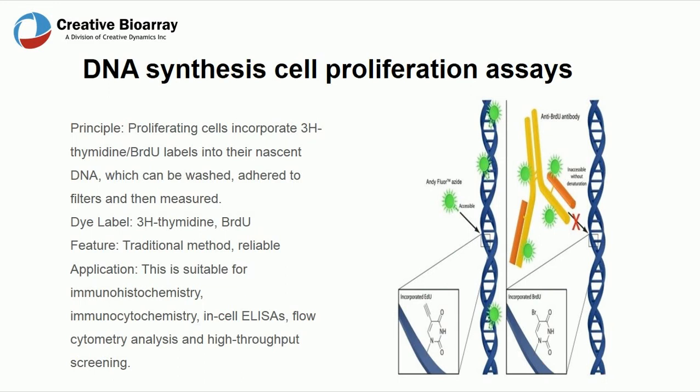For DNA synthesis cell proliferation assays, proliferating cells incorporate 3H-thymidine or BrdU labels into their nascent DNA, which can be washed, adhered to filters, and then measured.